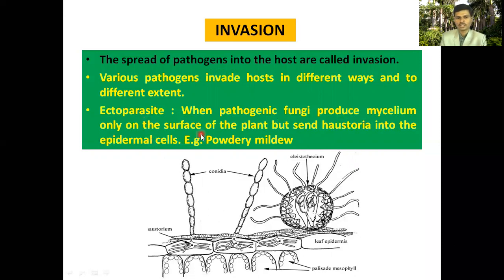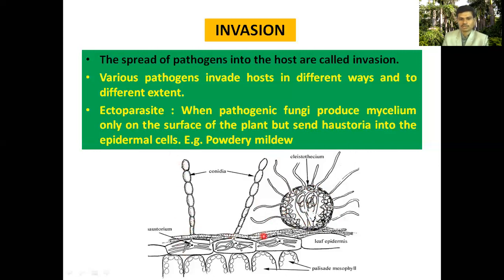An example of an ectoparasite is the powdery mildew pathogen. The cleistothecium — the closed fruiting body of this pathogen — causes powdery mildew on crops such as wheat. Inside the closed fruiting body, asci develop, and inside each ascus, eight ascospores are produced. The mycelium develops haustoria but remains only up to the epidermal cell, which is why this parasite is called an ectoparasite.